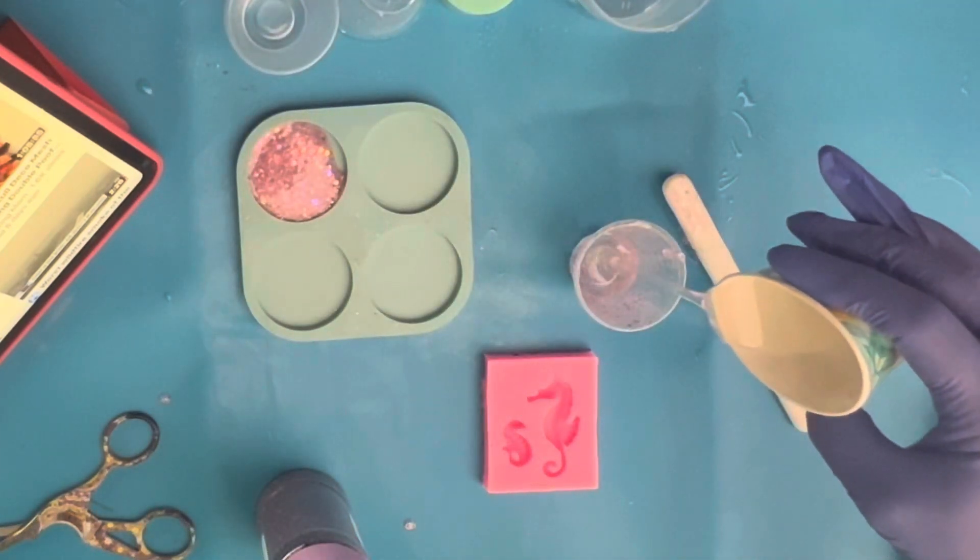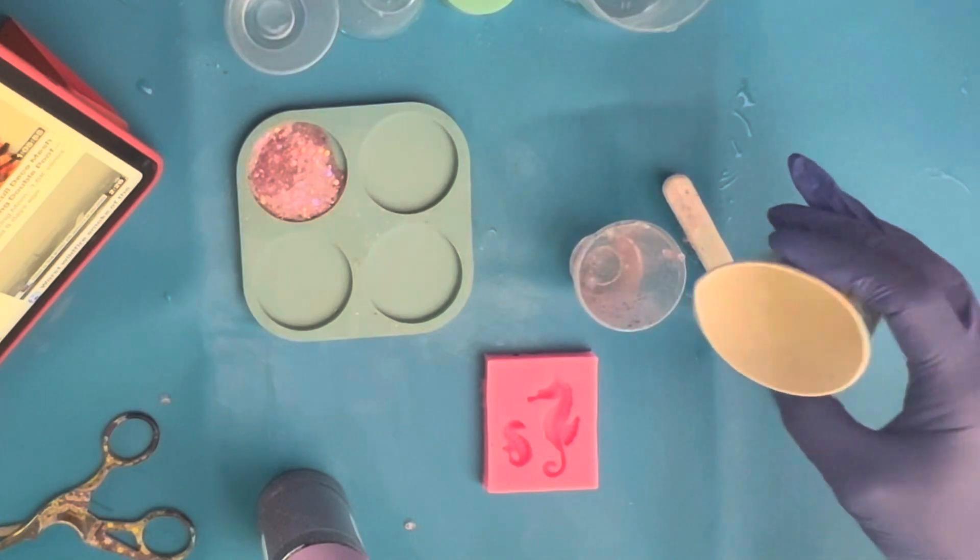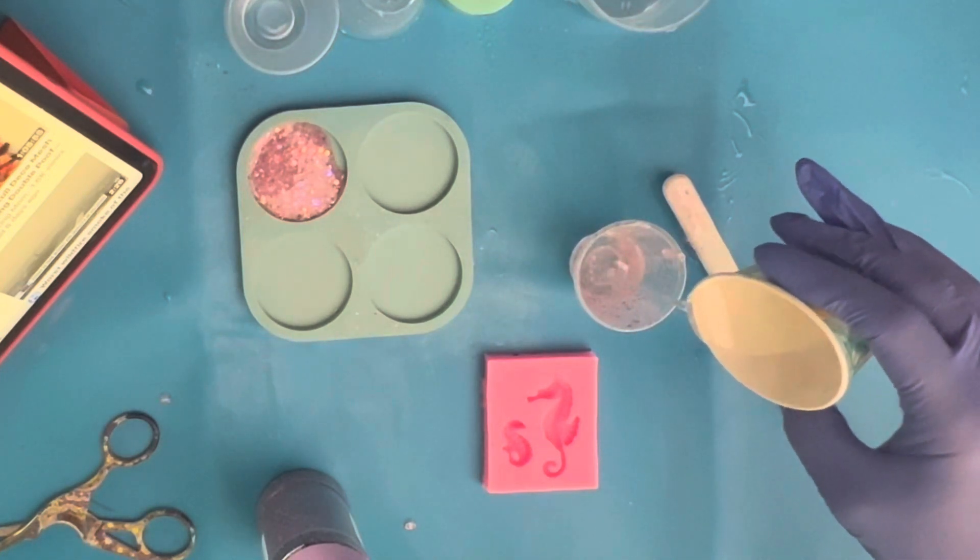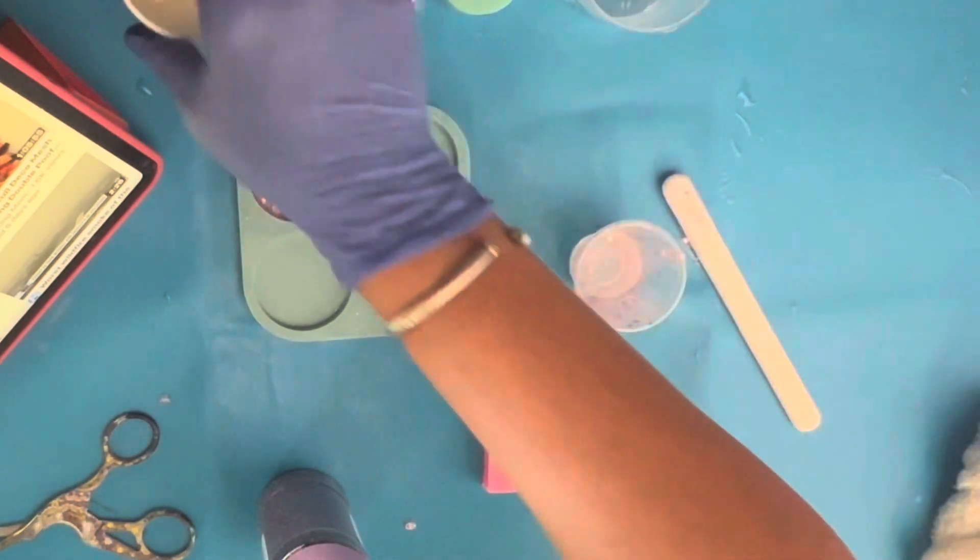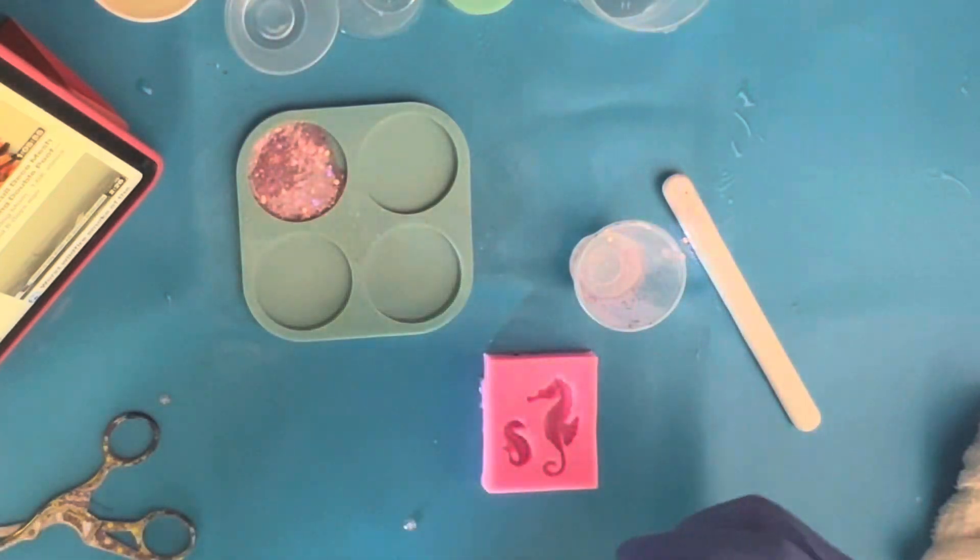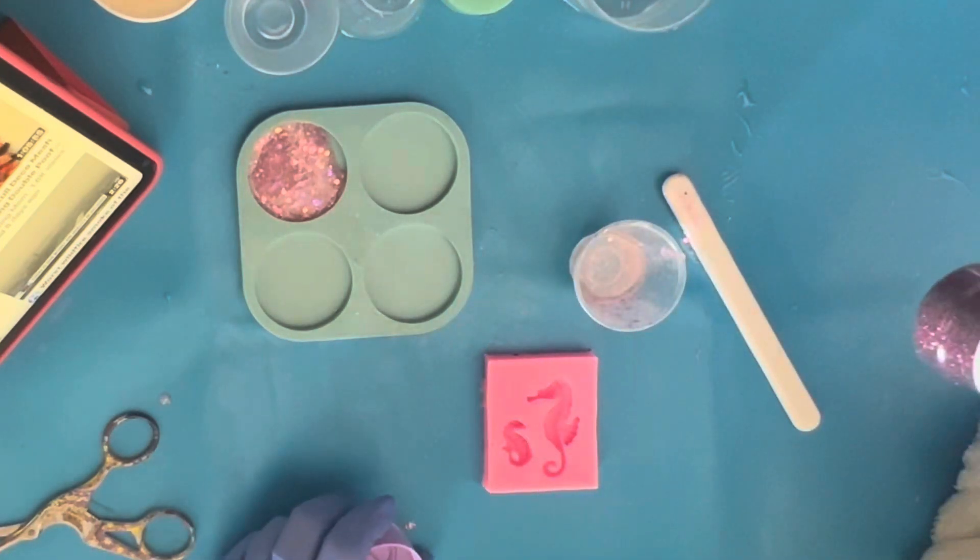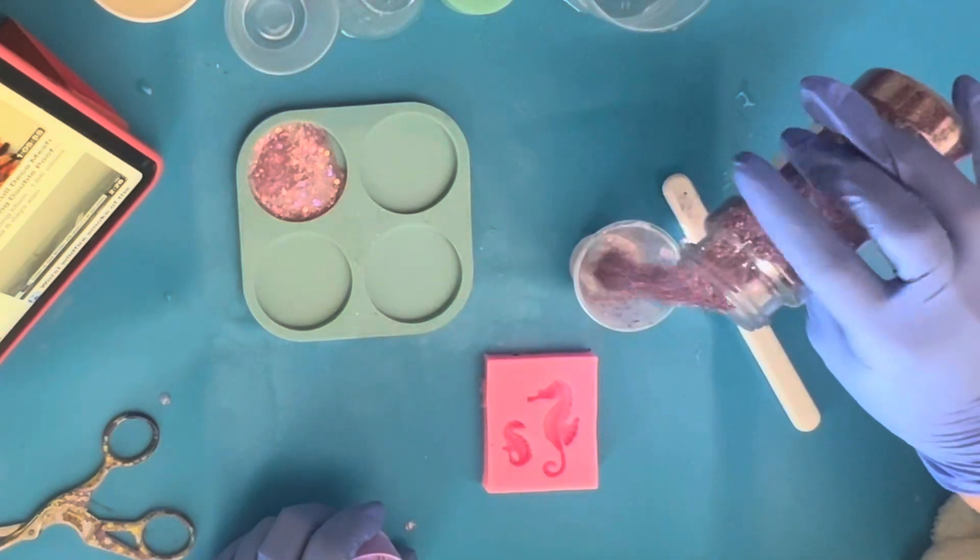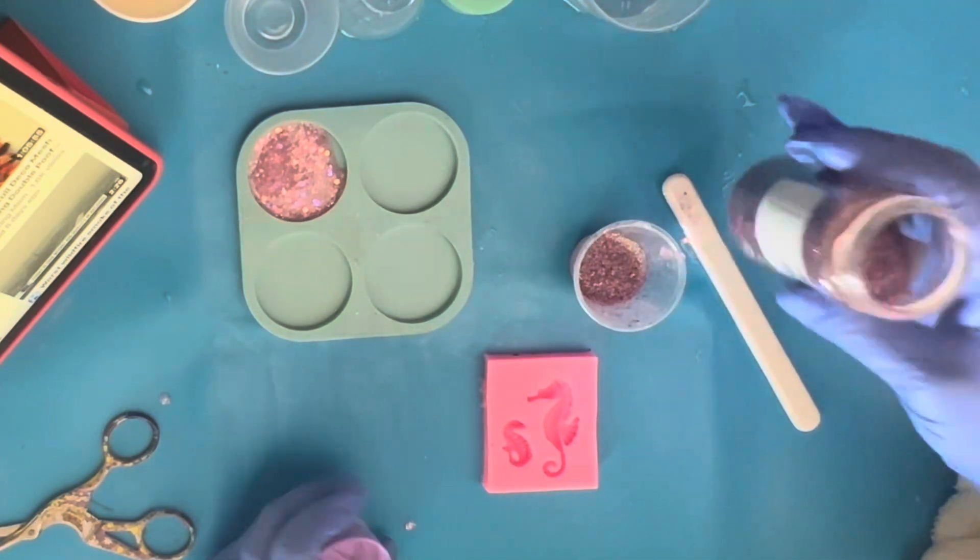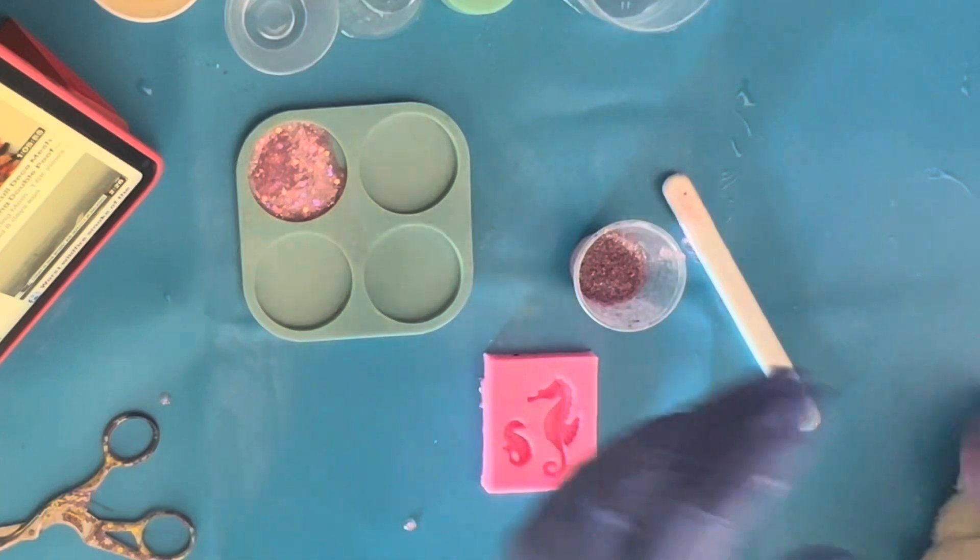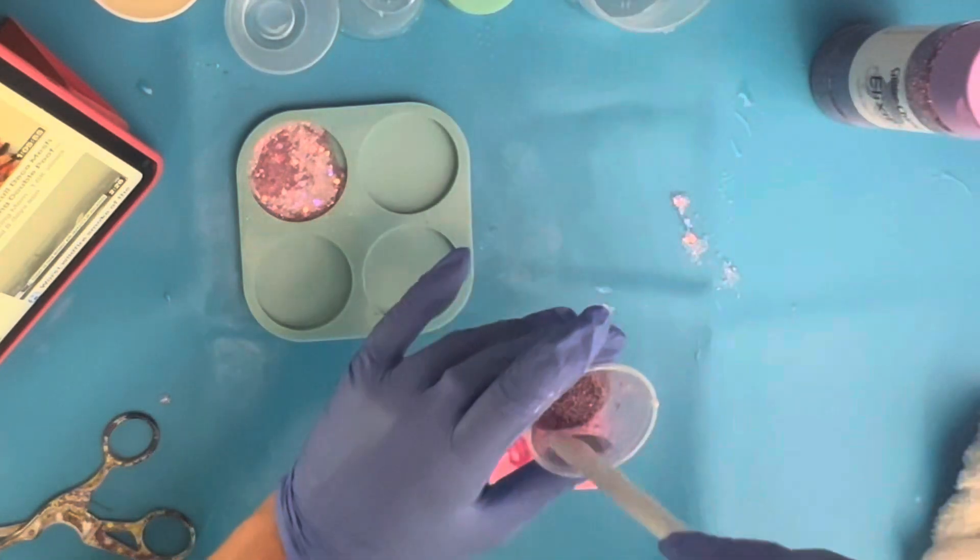The glass that I'm going to be using is from Dollar Tree. I'm using a little bit of epoxy and my glitter is from Glitter Chimp. So we are going to just mix it up, two-part epoxy, and we are going to make a mold from a seahorse.